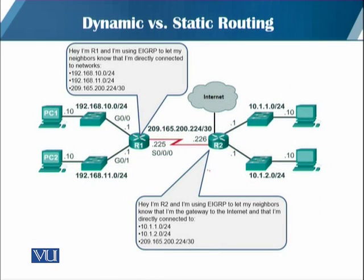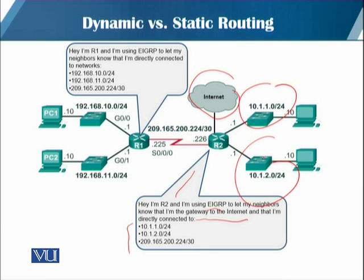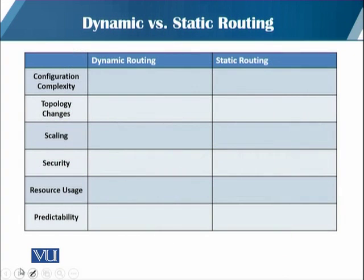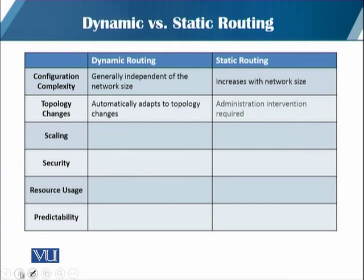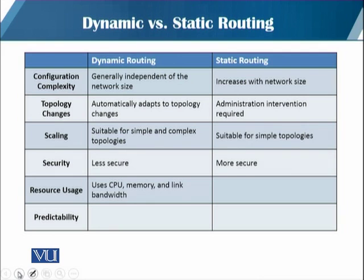اس example میں router R2 EIGRP use کر رہا ہے، اپنے neighbors کو بتانے کے لیے کہ وہ internet کا gateway ہے اور directly connected ہے ان networks کے ساتھ۔ اسی طرح R1 بھی EIGRP protocol use کرتا ہے اور اپنے neighbors کو بتاتا ہے۔ Static routing آپ default route یا stub network کے لیے use کرتے ہیں، اور dynamic routing normally overall network routing table configuration کے لیے use کرتے ہیں۔